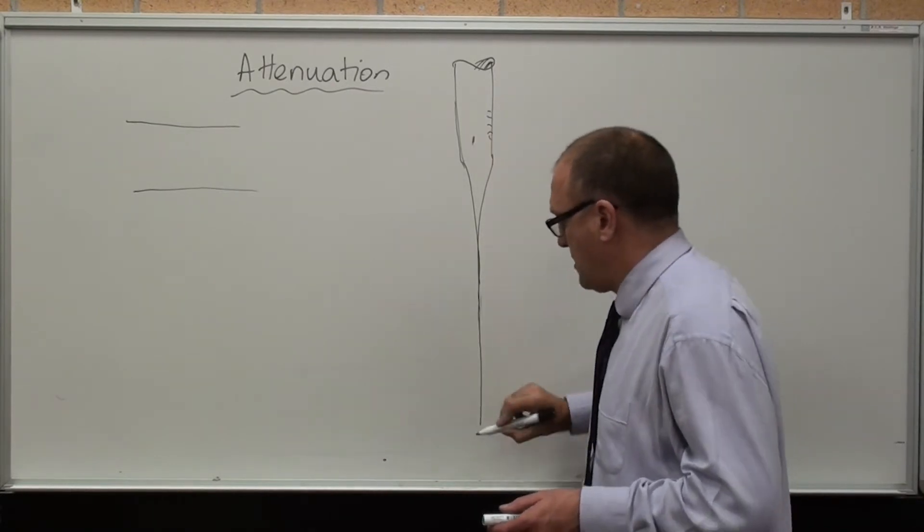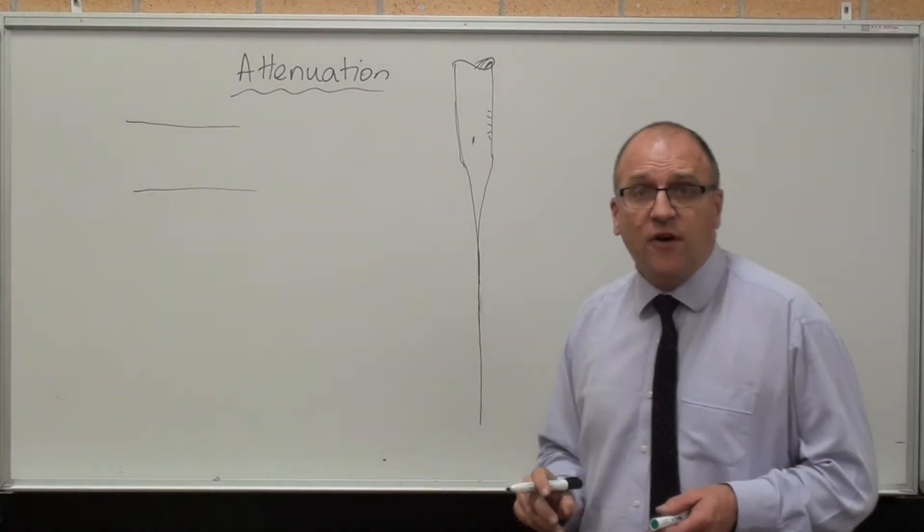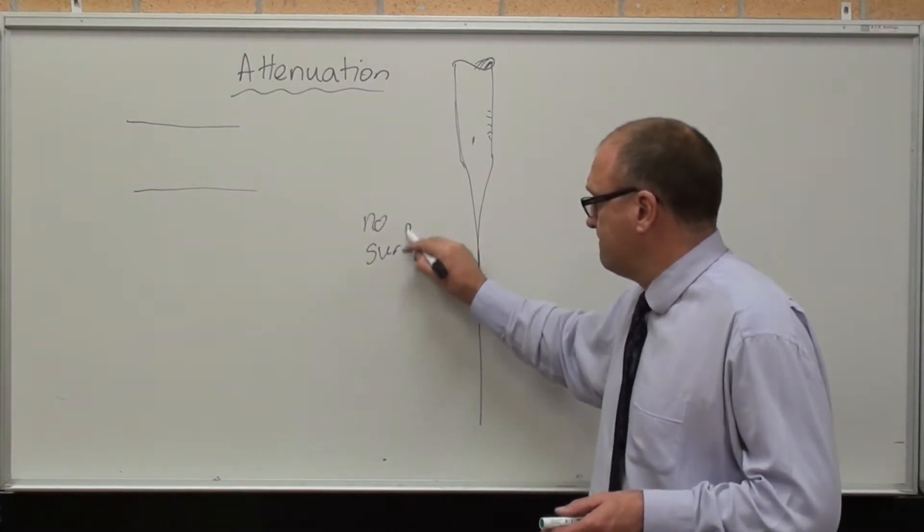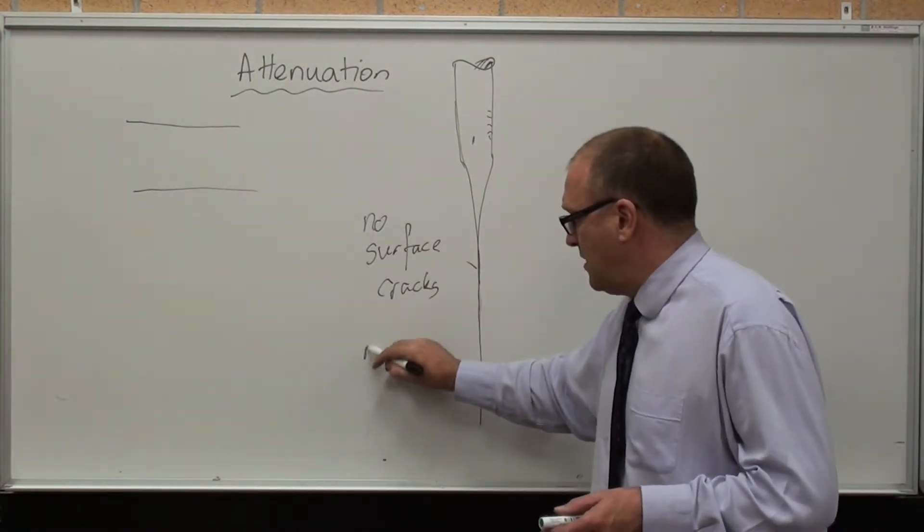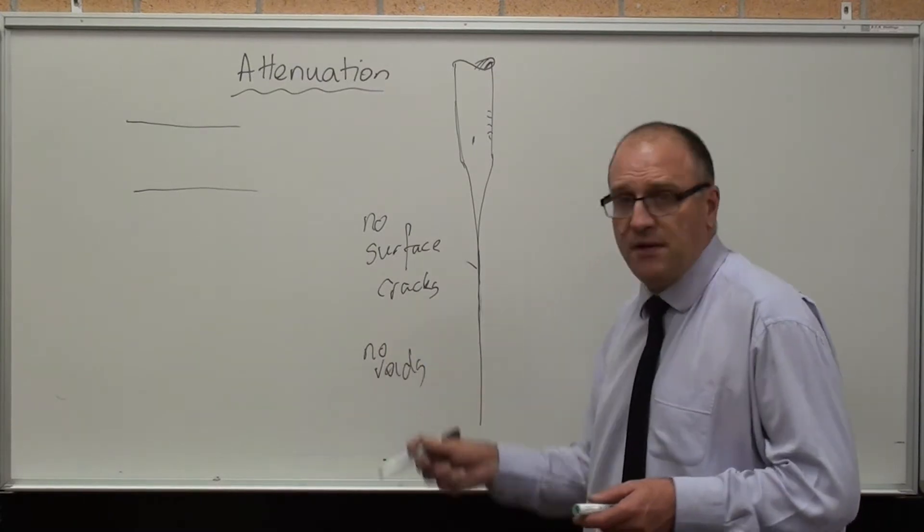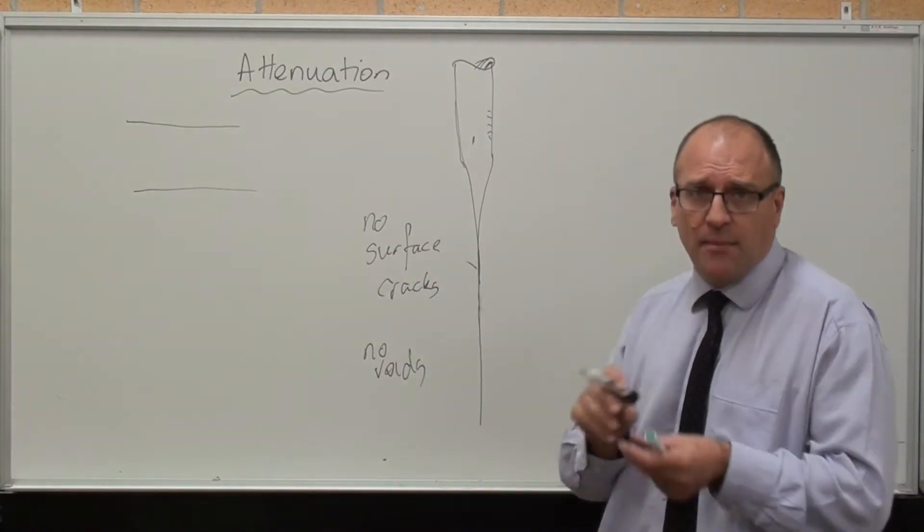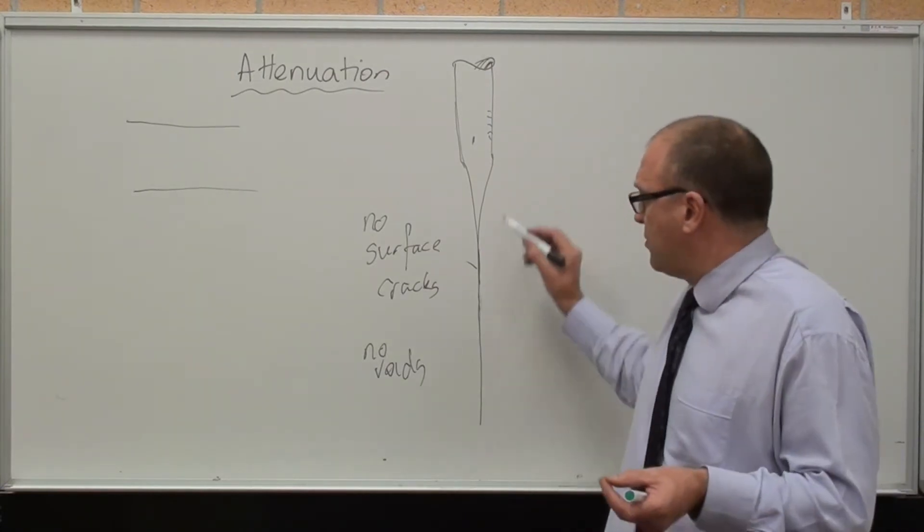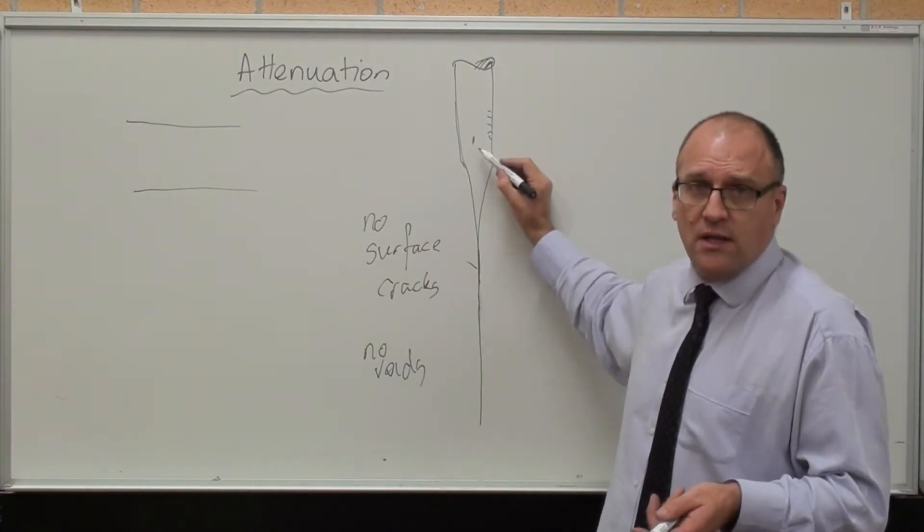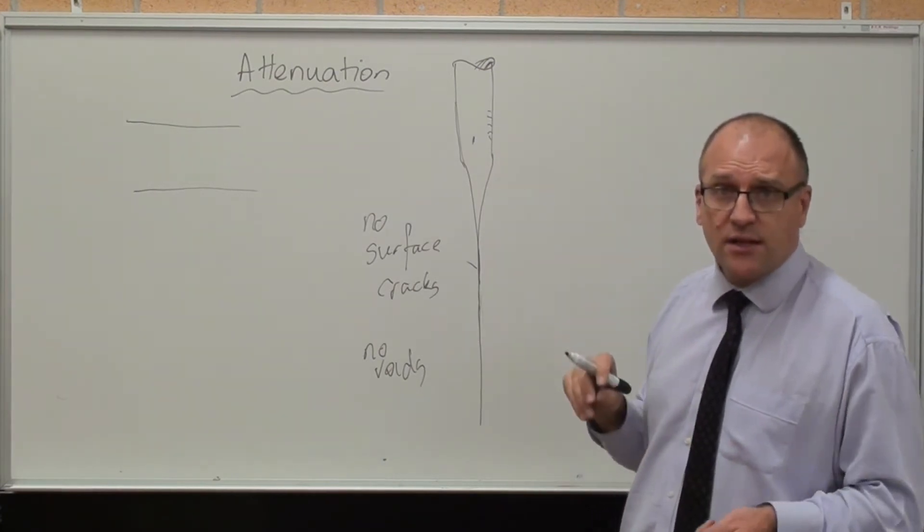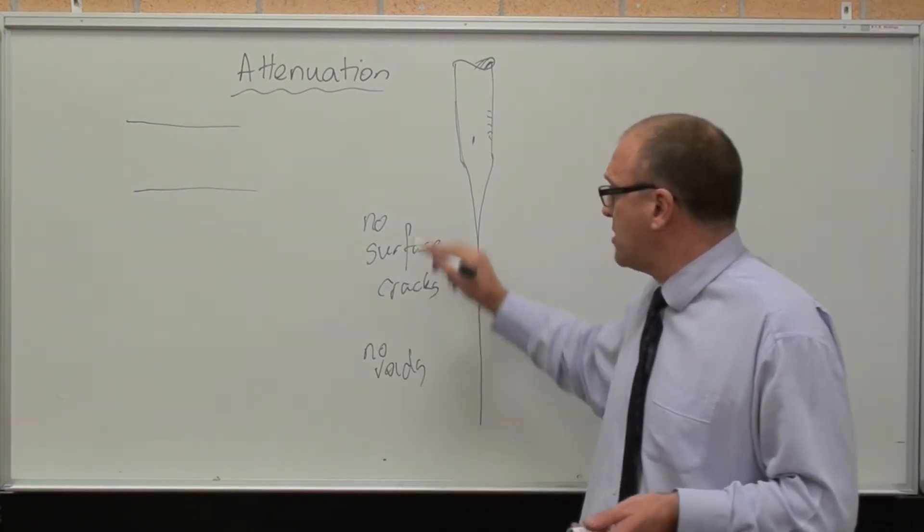Any voids get closed up. So the fibre has got no cracks and no voids, because the physical action of drawing out that glass rod into the fibre either aligns a void perfectly or closes it up, and just drags those surface cracks out so they just don't exist. So we've got a high strength fibre.